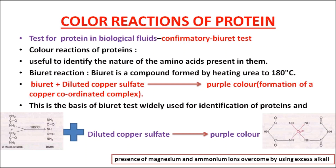Another important MCQ from this topic is color reactions of protein. The most confirmatory test to detect protein in a food item is the biuret test. In the biuret test, two moles of urea are heated to produce the compound biuret. As shown in the picture, biuret is added to diluted copper sulfate. If the component contains protein, it gives a purple color. This purple color indicates the formation of a copper-coordinated complex, confirming the presence of protein.